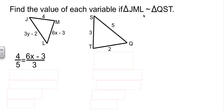Well, if it's JML, then J matches Q, and M matches S. So four matches with five because JM, ML matches ST.